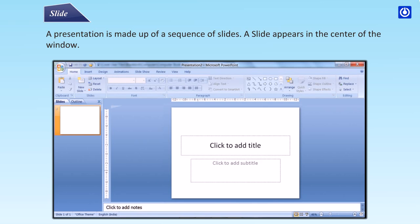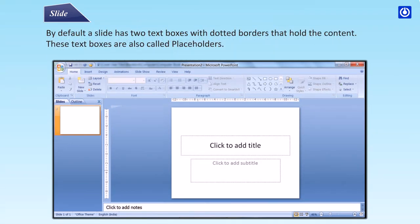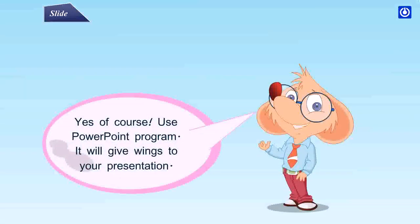A slide appears in the center of the window. By default, a slide has two text boxes with dotted borders that hold the content. These text boxes are also called placeholders. When you change a slide layout, it shows various contents. By clicking on the respective icons, you can add a picture, table, chart, and the likes.